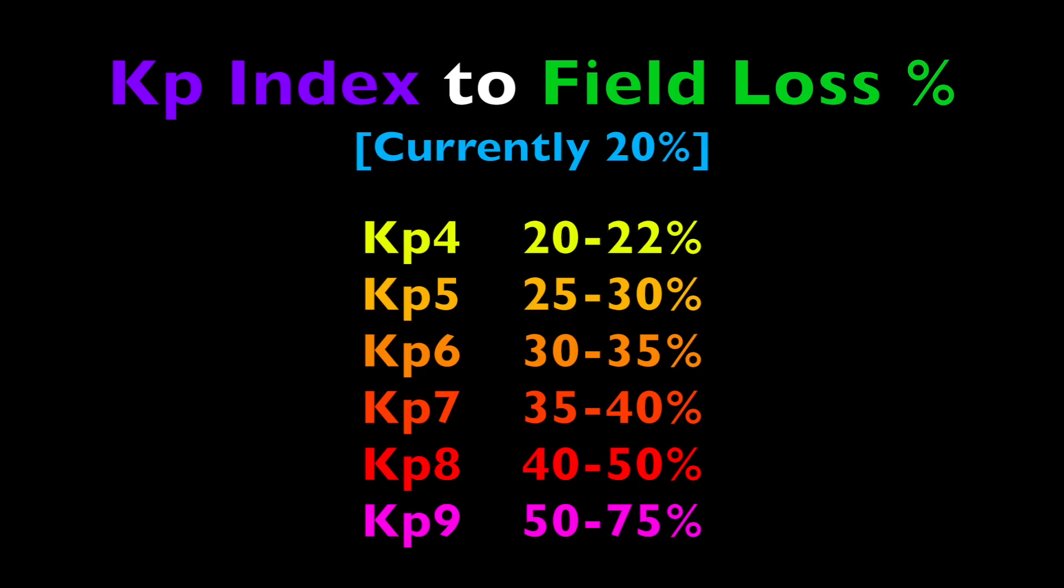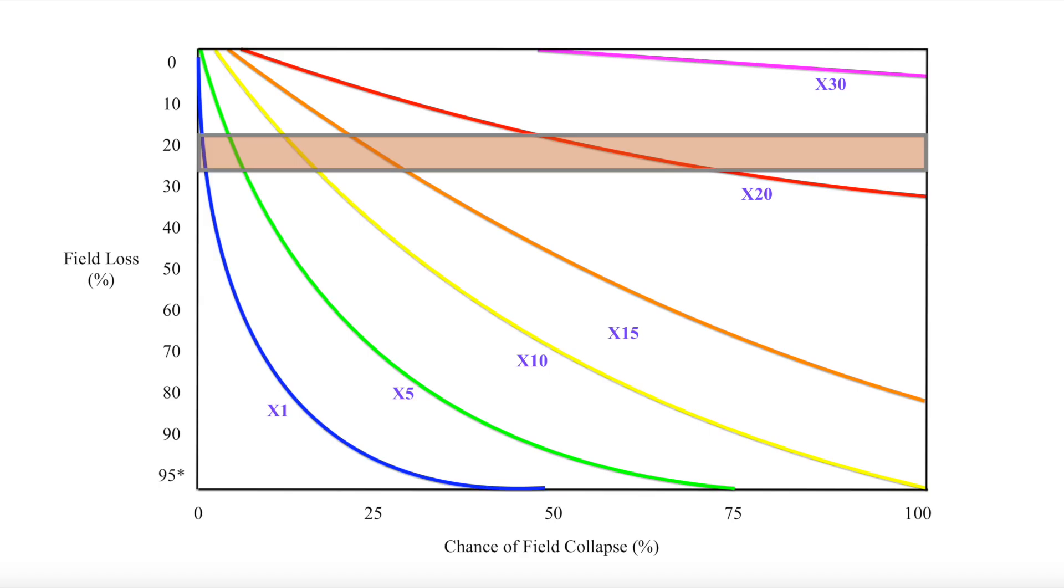KP index to field loss percentage. There would be virtually no effect before KP4, which is where instability in the field begins. And as geomagnetic storms scale up, this can be a great approximation of where on this chart we would find another impact risk of that collapse.